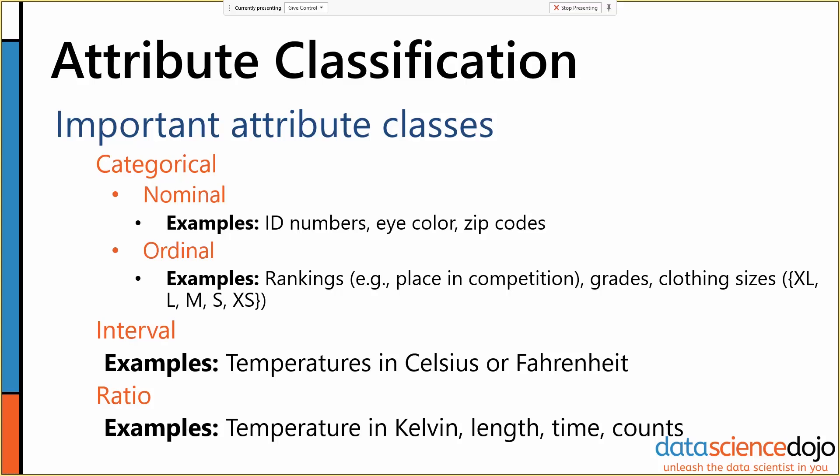Pretty straightforward linguistics there. Ordinal attributes are nice because we can code them as integers and maintain the ordering between them, so we don't have to treat them particularly specially. But most categorical variables are what we call nominal categorical variables or attributes. Nominal attributes have no inherent ordering to them — for example, eye color, zip codes, ID numbers,